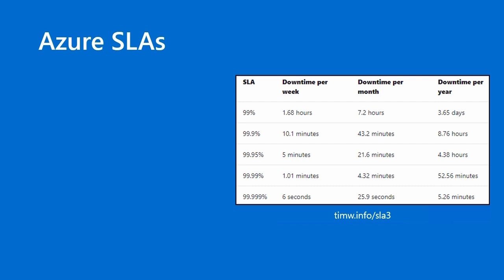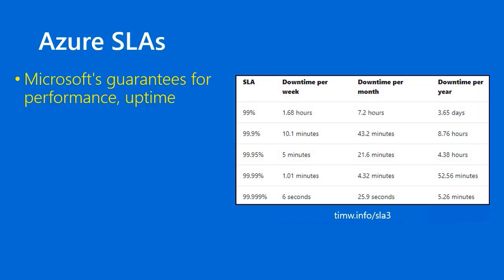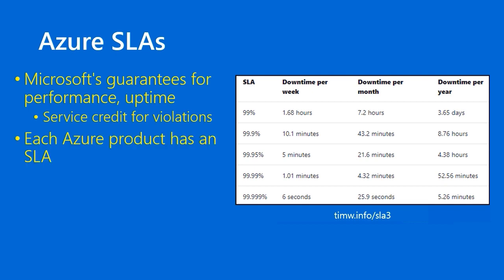A Service Level Agreement, or SLA, is a contract between a provider and a customer. The Microsoft Azure SLAs are Microsoft's guarantees for their Azure services, specifically their performance level and/or their uptime or availability. If Microsoft violates the SLA, they will normally grant you service credit on your next invoice. Each Azure product has its own service level agreement, and as of this recording in late July 2020, there are nearly 200 services. Knowing where to find an SLA is an important skill, and I'll make sure to teach you that in our demo today.